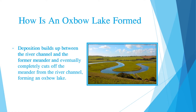The deposition builds up between the river channel and the former meander, and eventually completely cuts off the meander from the river channel, forming an oxbow lake. Have a look at this picture. Have you seen these two bends? Hence, there is a strong possibility of forming an oxbow lake here when these two bends will join at a certain point of time after heavy erosion, leaving an oxbow lake behind.